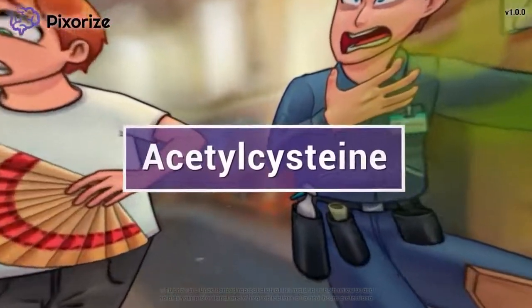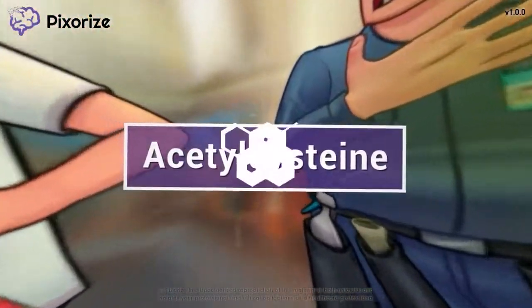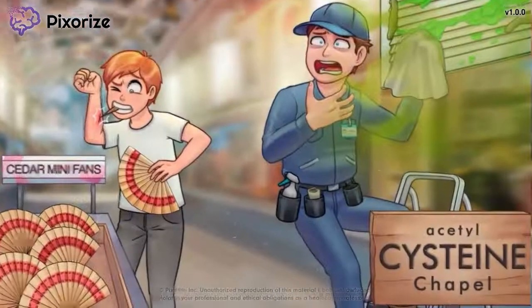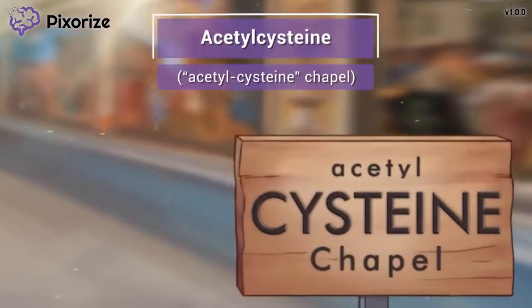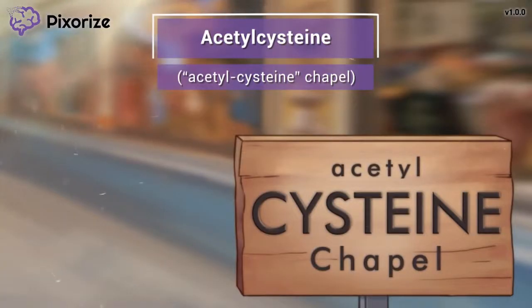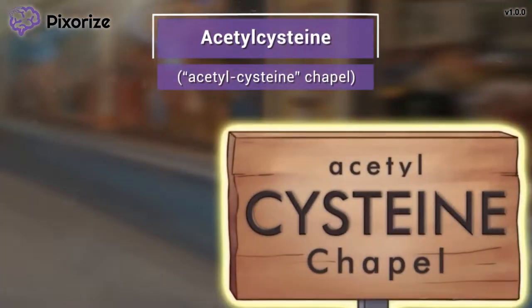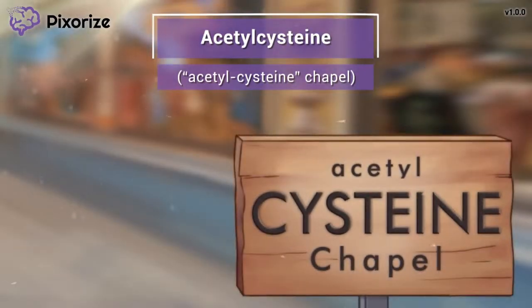Acetylcysteine is a medication used to treat pulmonary congestion as well as to treat acetaminophen overdose. In this mnemonic video, we'll cover important facts about acetylcysteine so you'll be ready come test day. Welcome to the famous acetylcysteine chapel where you're about to see one of the most spectacular views. The cysteine chapel is our symbol for the drug acetylcysteine.